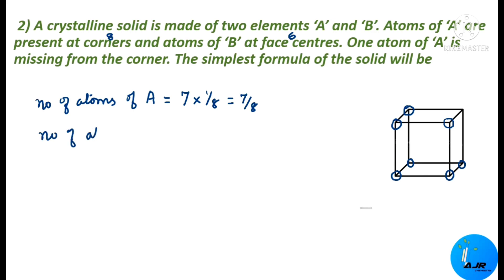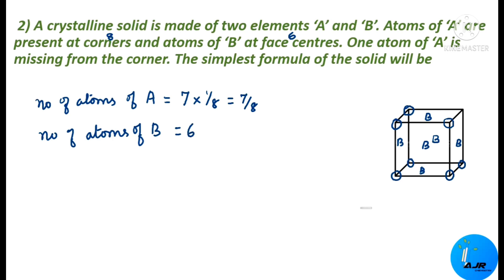Number of B atoms: there are six faces, and B atoms are at the face centers. Each face-centered atom is shared by two unit cells, so the contribution is 1/2 per face atom. Therefore, number of B atoms = 6 × 1/2 = 3.